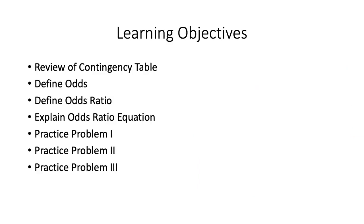The learning objectives are the following: a review of the contingency table, define what an odds and odds ratio are, explain the odds ratio equation, and apply all three different concepts. We will put these into practice by working through four practice problems.